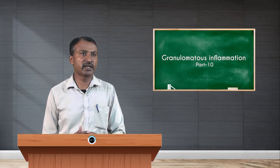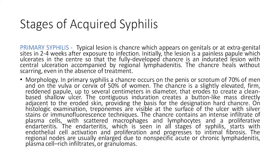Other modes include transfusion of infected blood or maternal-fetal transmission in congenital syphilis. There are different stages of acquired syphilis: primary, secondary, and tertiary. In primary syphilis, the typical lesion is a chancre, which appears on the genitals or at extra-genital sites two to four weeks after exposure. Initially the lesion is a painless papule which ulcerates in the center, so the fully developed chancre is an indurated lesion with central ulceration, accompanied by regional lymphadenitis. The chancre heals without scarring even in the absence of treatment.